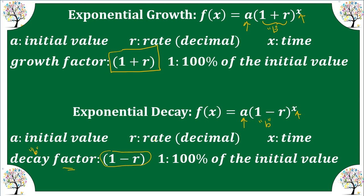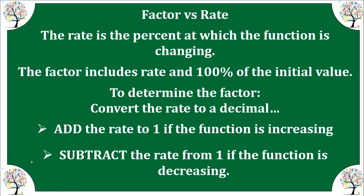The rate is just that percentage that it changed. The decay factor is 1 minus the rate, and the 1 from our formula stands for 100% of the initial value. The rate is the percent at which the function is changing. The factor includes the rate and the 100% initial value. To determine the factor, we convert our rate to a decimal and either add it to 1 for growth or subtract it from 1 for decay.